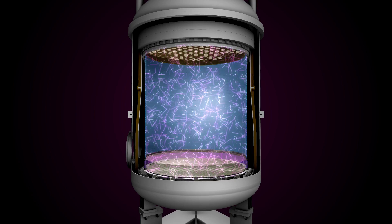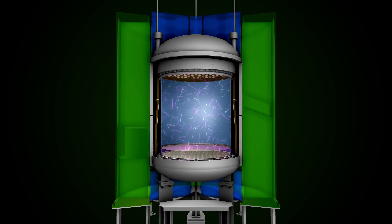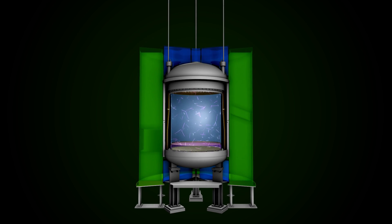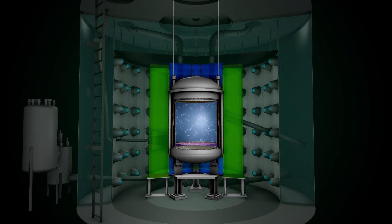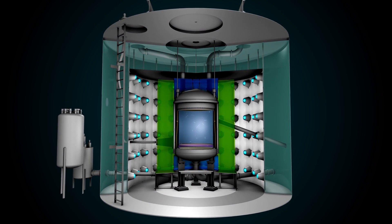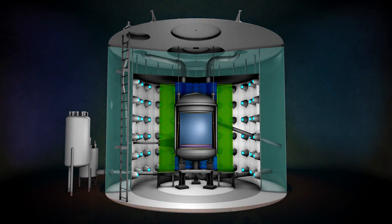The titanium tank will sit inside a bigger tank filled with a liquid that, like the xenon skin, detects gamma rays and neutrons. And both of those tanks will be inside a third tank filled with 70,000 gallons of water as the outer radiation shield. All of this will be located nearly a mile underground at the Sanford Underground Research Facility in South Dakota, where it's protected from cosmic rays.